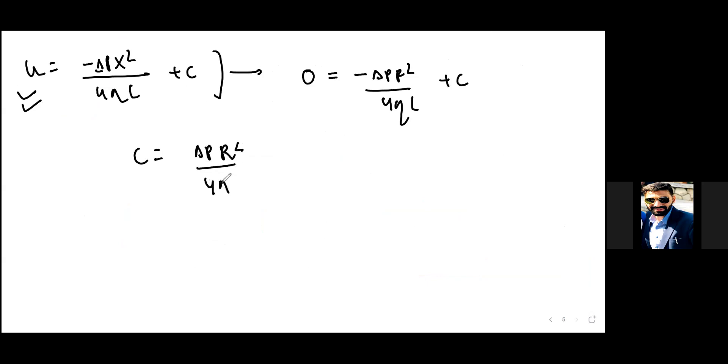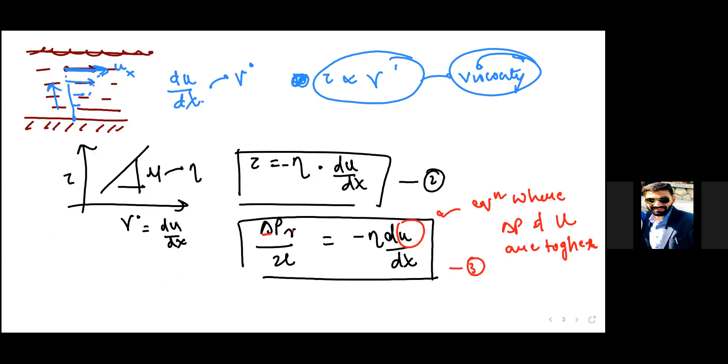Our final u becomes minus delta p x squared upon 4ηL plus delta p r squared upon 4ηL. Let me use a different color to circle this part. This is our fourth equation.